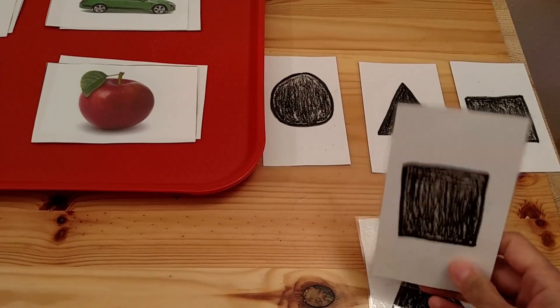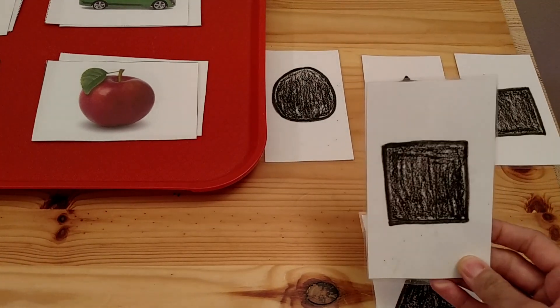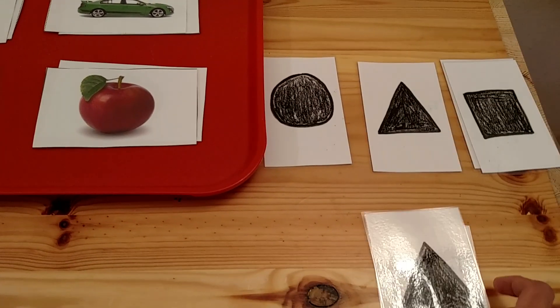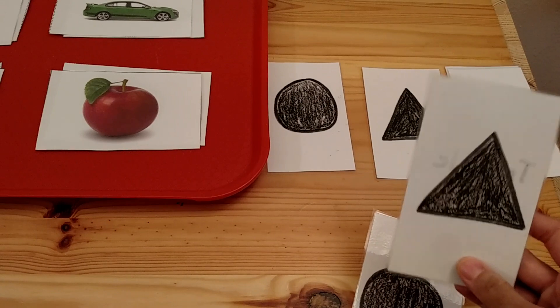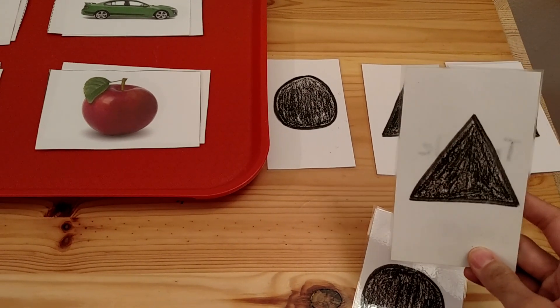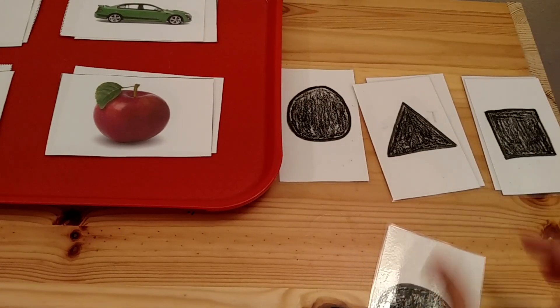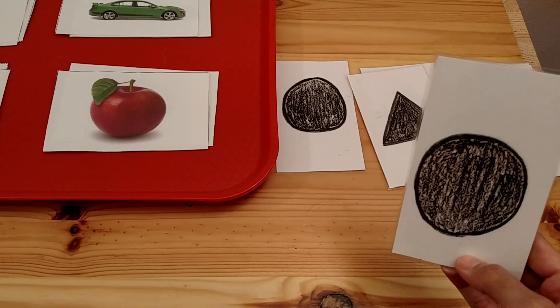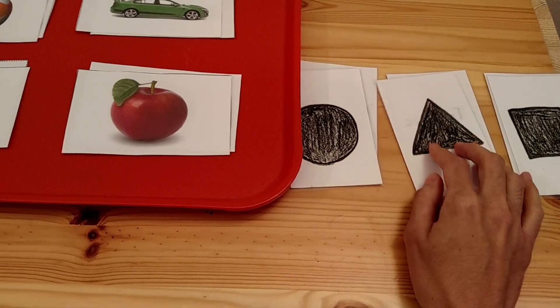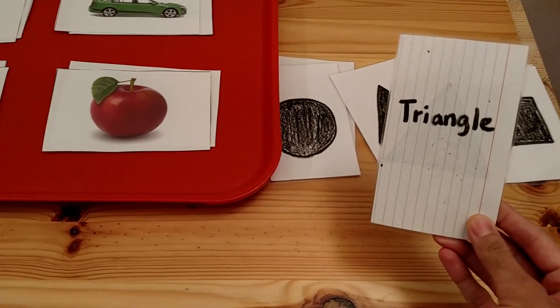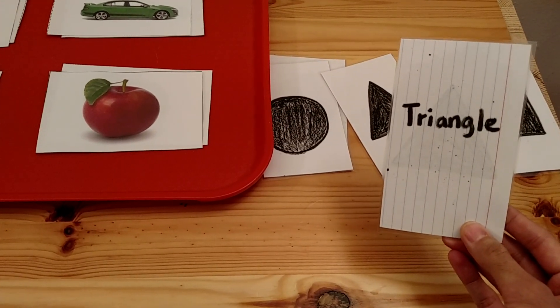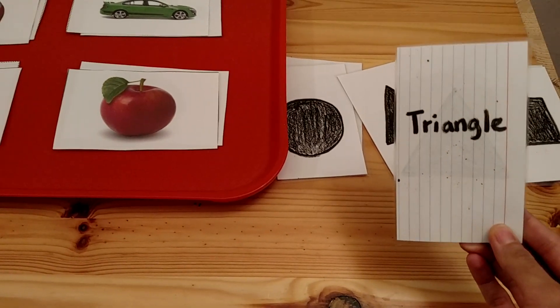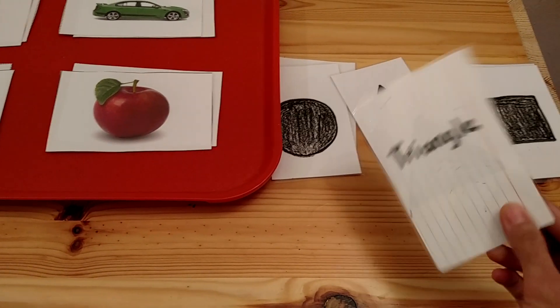Now you can go on to matching. This is a square. Can you find the square? This is a triangle. Can you find the triangle? This is a circle. Can you find the circle? And at the back here, I have the names of the shapes. When the child gets older and they can read, you can use these cards as flash cards. And you can play other games with these as well.